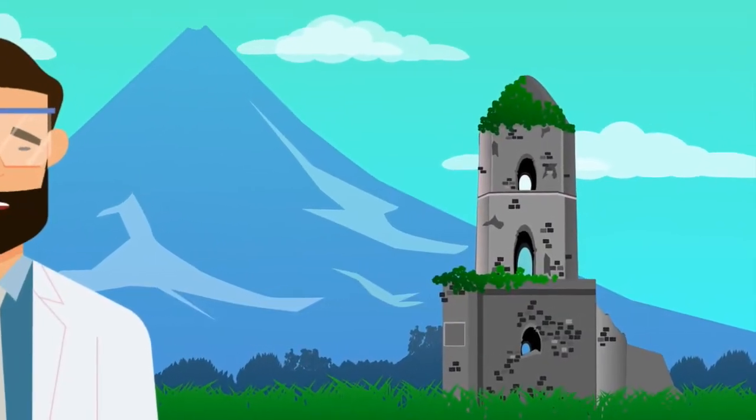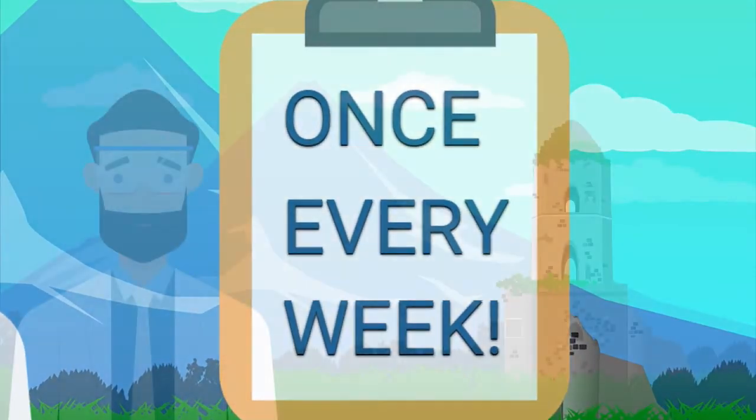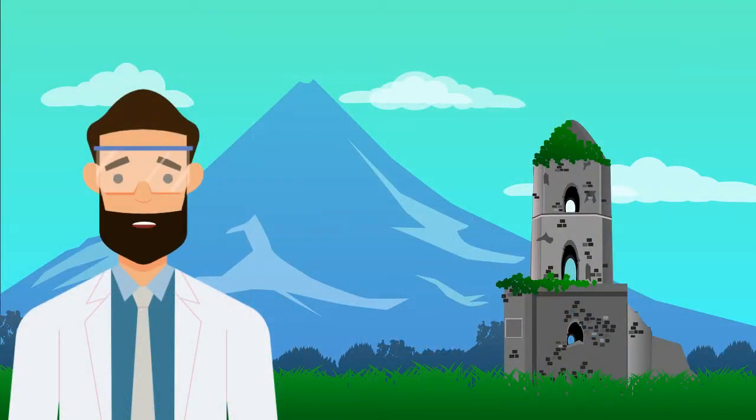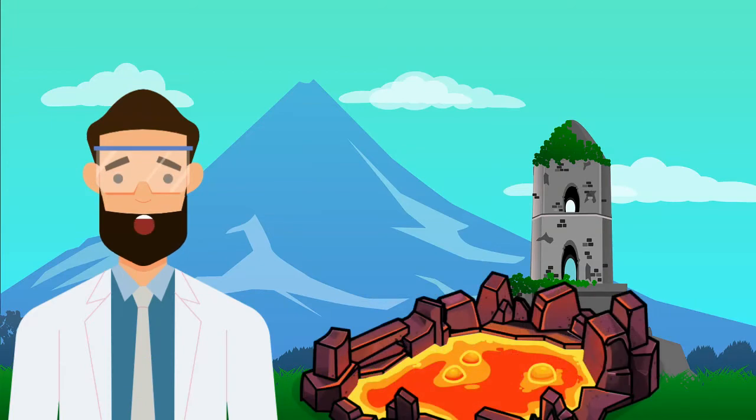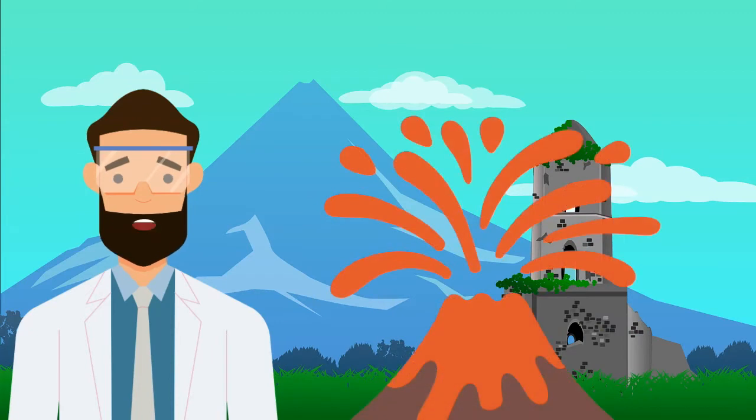A volcano erupts somewhere on Earth once every week. Lava is so hot that if you used a glass thermometer to measure its temperature, it would melt. It may be the same hot stuff, but it's called magma when it's below the surface and lava when it's above the surface.